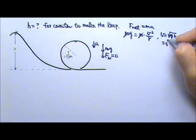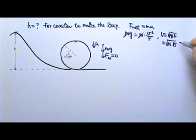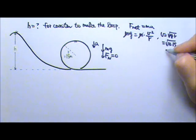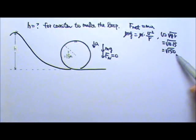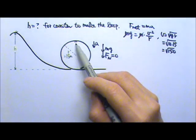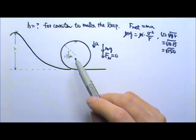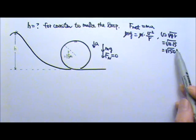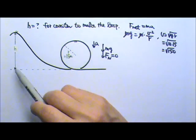Now if I plug in g is 10, r is 15, I will get square root of 150. Of course, I am not looking for the speed of the roller coaster up there. What I am looking for is the height. So I have to use this information to find the height.